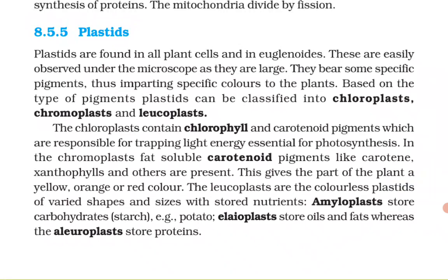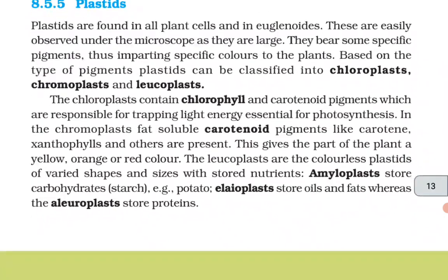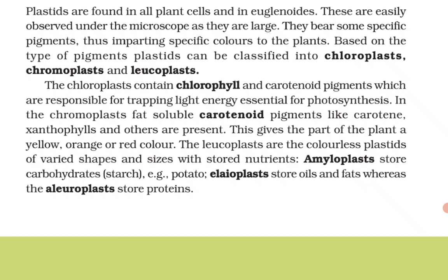Plastids: plastids are found in all plant cells and in euglenoids. They are easily observed under the microscope as they are large. They bear specific pigments, imparting specific colors to the plant. Based on the type of pigment, plastids can be classified into chloroplasts, chromoplasts, and leucoplasts. The chloroplasts contain chlorophyll and carotenoid pigments, which are responsible for trapping light energy essential for photosynthesis.